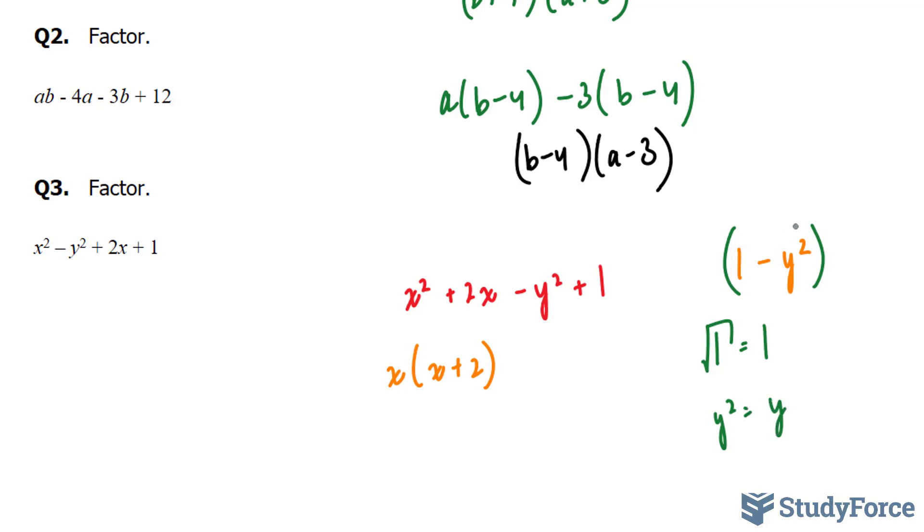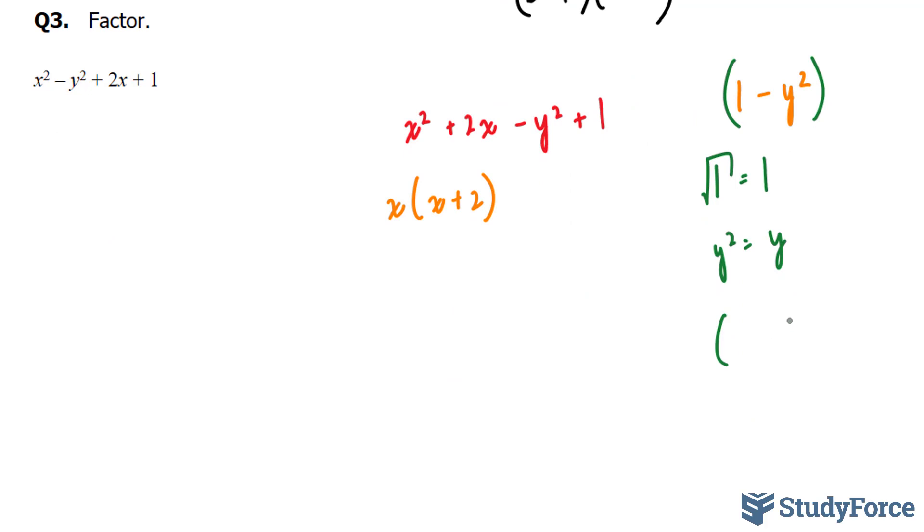Now, since this is a difference of squares, we can rewrite it in this way, 1 minus y and 1 plus y. So I'm going to take this and replace these two terms with that, 1 minus y and 1 plus y.